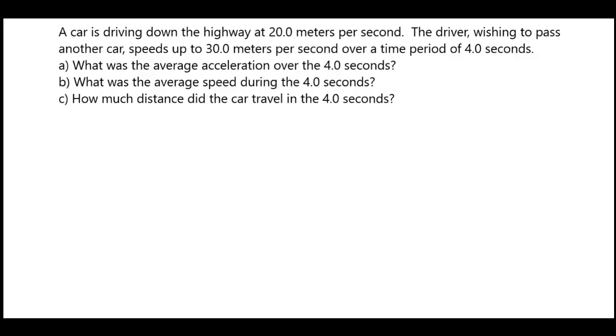The first thing we're going to do is answer question A, which is what was the average acceleration over the 4.0 seconds? So we start by writing down our givens. In this case, the initial velocity is 20.0 meters per second. We know the final velocity at the end of the 4 seconds is 30.0 meters per second. And we know the time period that this is occurring in is 4.0 seconds.